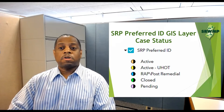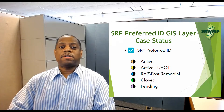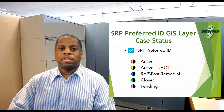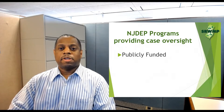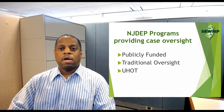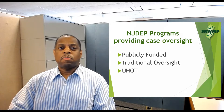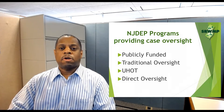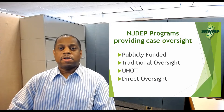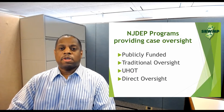The tool also identifies the cases overseen by NJDEP as publicly funded, traditional oversight, unregulated heating oil tank — more commonly known as UHOT cases — or direct oversight.